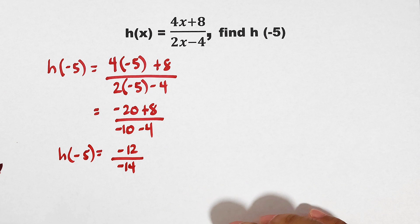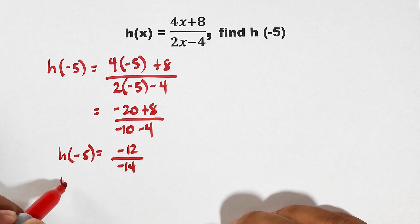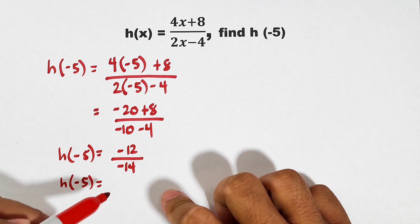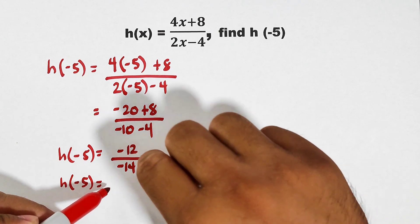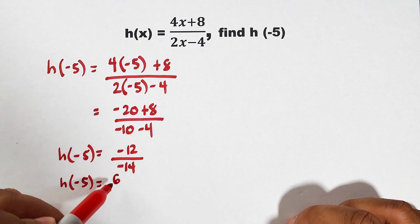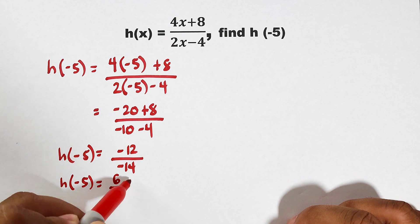To finally have the answer, h of negative 5, what we need to do is simplify this fraction. Negative divided by negative is positive. Then your 12 over 14 can be simplified as 6 over 7.